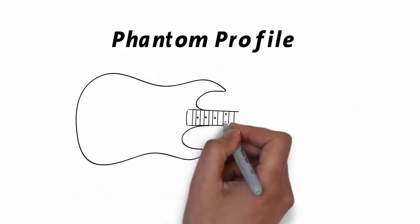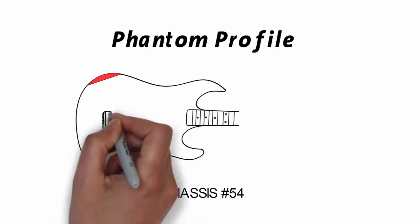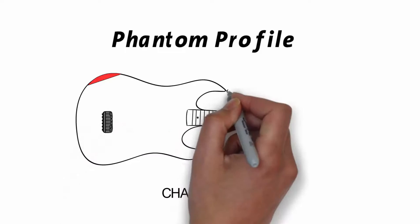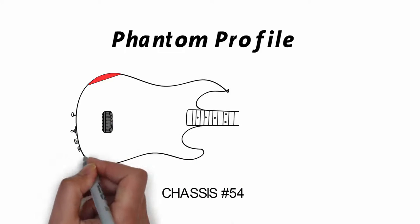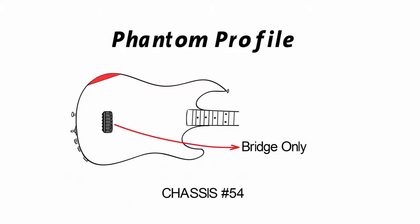A phantom profile uses the Thumb-Groove designed phantom pickup, which is concealed below the wood of the guitar, resulting in a minimal landscape. A look Thumb-Groove believes is a glimpse of future guitar design.